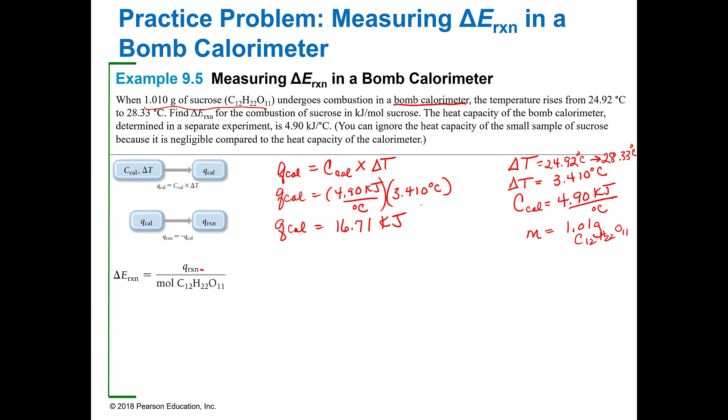So the Q_cal is going to be equal to 16.71 kilojoules. Now this increased in temperature so this is a positive temperature change because it went from 24.92 to 28.33. That's a positive 16.71. This was step one.